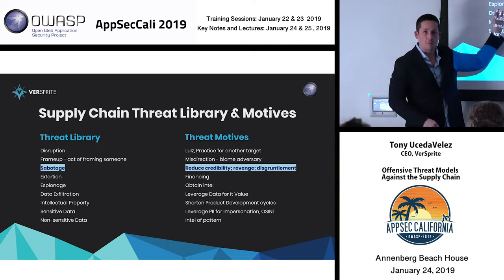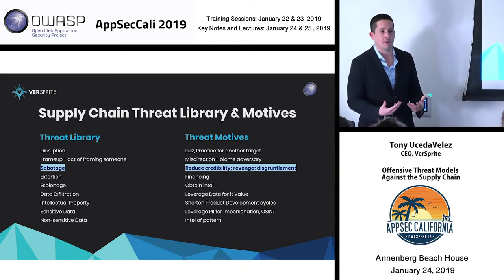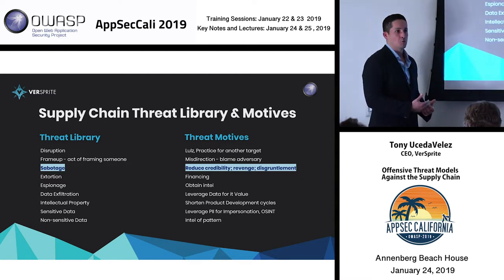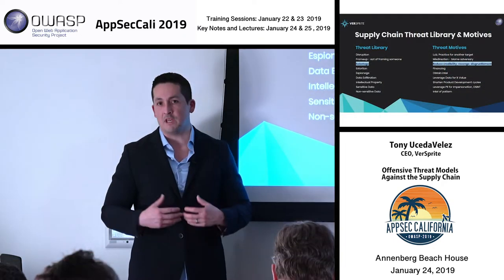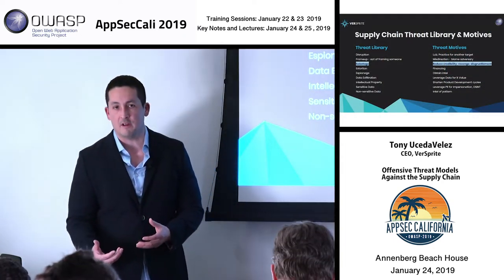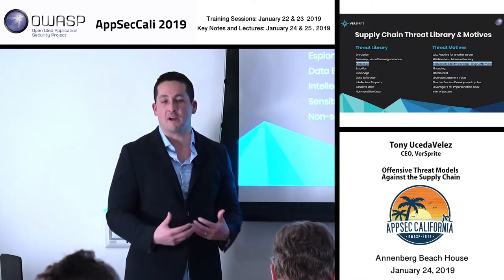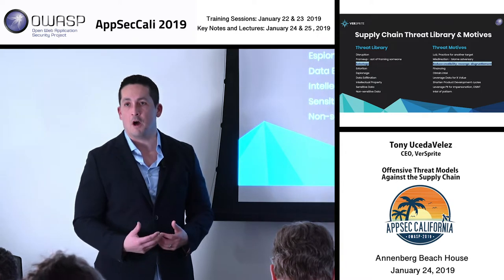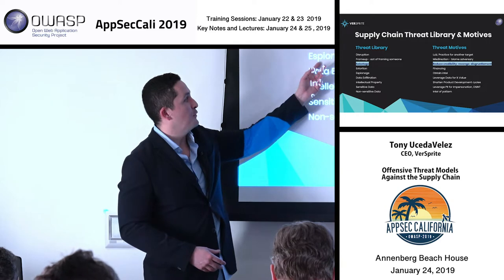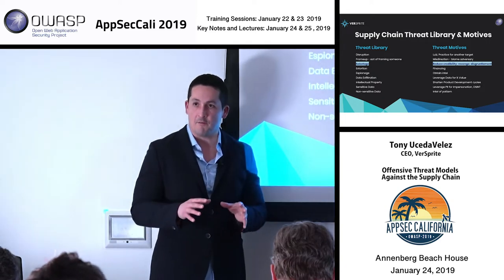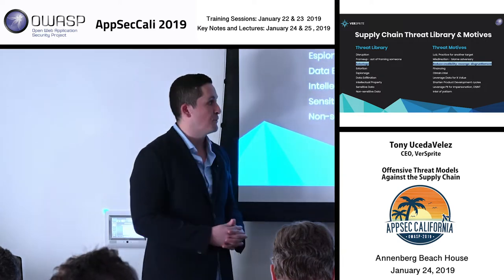Espionage is another component. If you want to curtail business development and manufacturing, you want to infiltrate a supply chain for your competitor. It could be in a PLC component, it could be in some level of controller on a machine that provides reconnaissance of information to that environment, or it could be a human asset. Infiltrating the target environment of a supply chain for the purposes of espionage is extremely attractive for international threat actors.